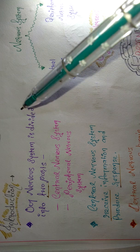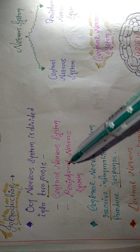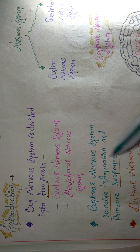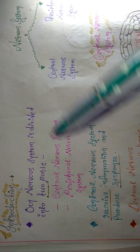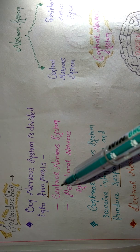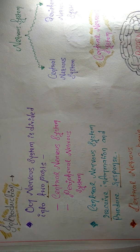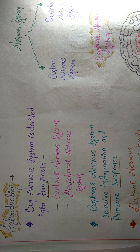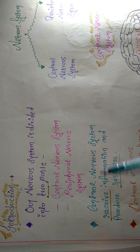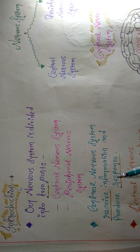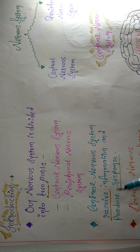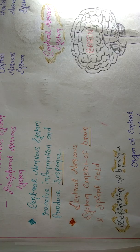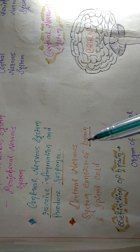Central nervous system includes brain and spinal cord. Peripheral nervous system means all the nerves around our limbs — hands and legs. Peripheral nervous system means both sides, and central nervous system means the middle. The main function of the central nervous system is receiving information and producing a response.